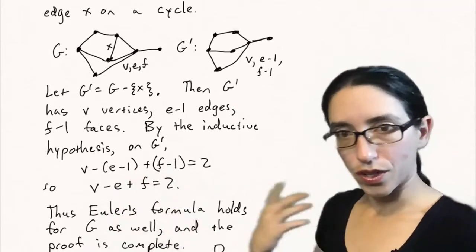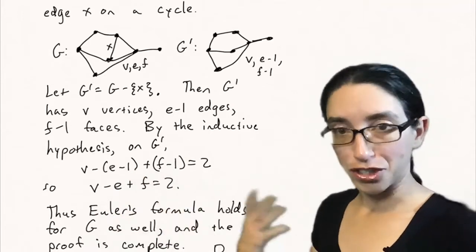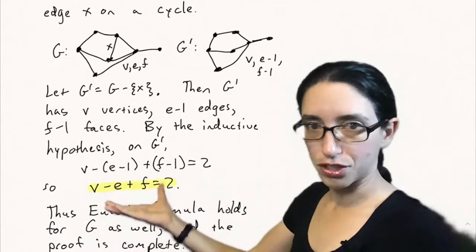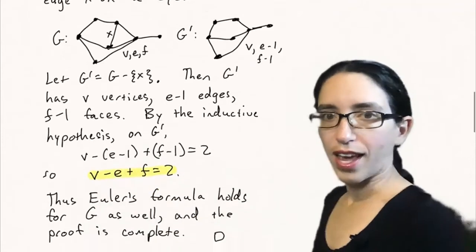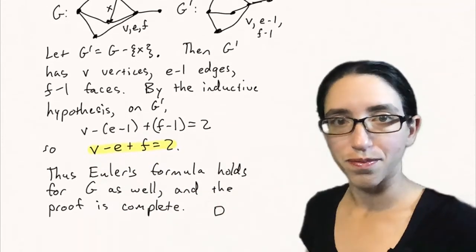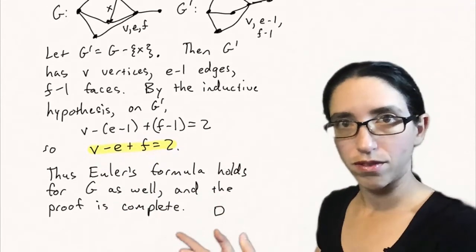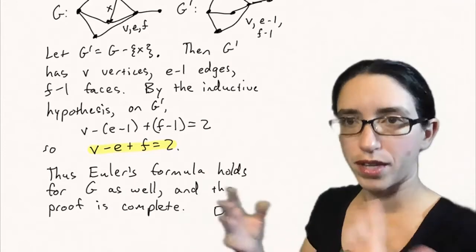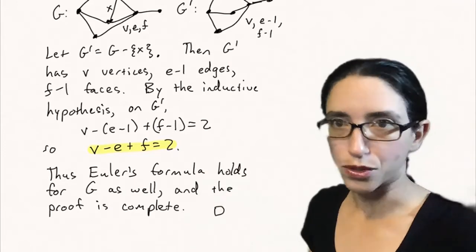So Euler's formula holds for G as well, since V, E, and F are the quantities for G. That completes the proof by induction, using the fact that it was true for G prime to show it is true for G.